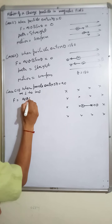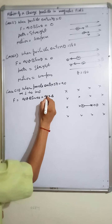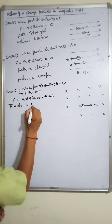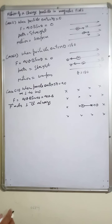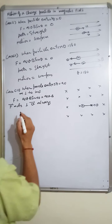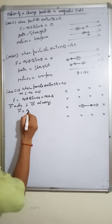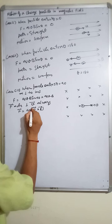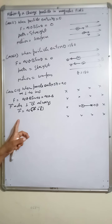At 90 degrees, F = qvB·sin(90°) = qvB. This force is represented as F = q(v × B). The force always acts perpendicular to the velocity because it is a cross product of velocity and magnetic field.